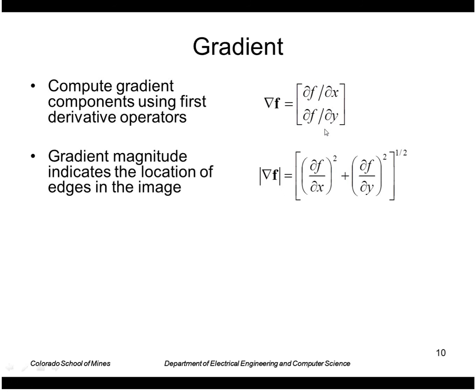We can take the magnitude of the gradient by taking the sum of the squares and taking the square root like this. A high value of the magnitude would indicate essentially a location of an edge in the image where there was a large transition from light to dark or dark to light.